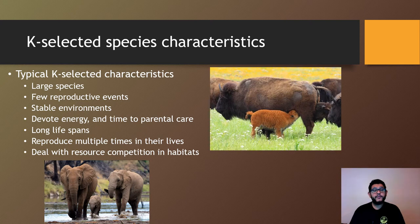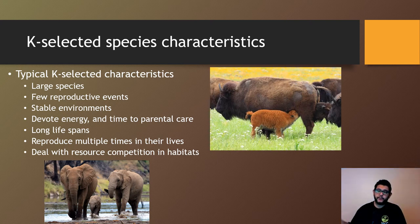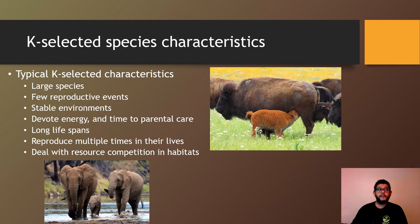K-selected species reproduce several times in their lives — not one right after another, but they do reproduce multiple times. They also have to deal with resource competition because they're not usually wide-ranging, so they tend to compete for resources within their habitats.